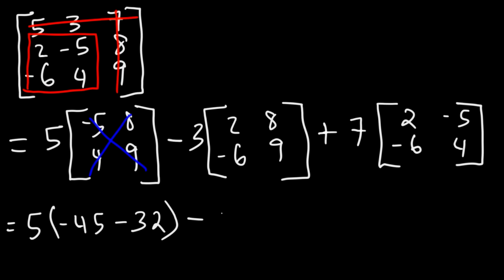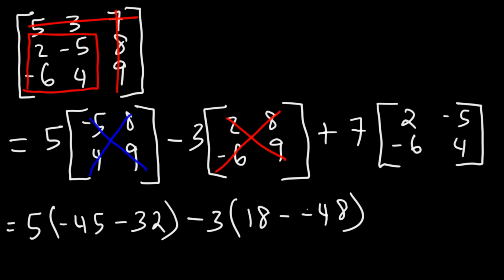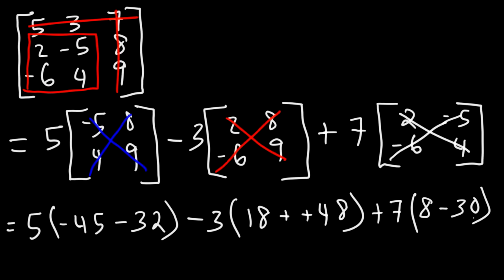Next, we have negative 3, and then it's 2 times 9, which is 18, minus negative 6 times 8, which is negative 48. If you see two negative signs, you can turn it into a positive sign. And then it's going to be plus 7. And then we have 2 times 4, which is 8, minus negative 6 times negative 5, which is positive 30. So it becomes 8 minus 30.